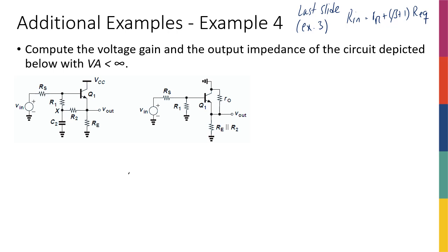Now let's look at a much more complicated example — the kind you might actually get on a test or quiz. The task is to compute the voltage gain and output impedance of the circuit depicted, and we're assuming there is an early effect, so we do have R_naught. Looking at this circuit, it's actually pretty complicated.